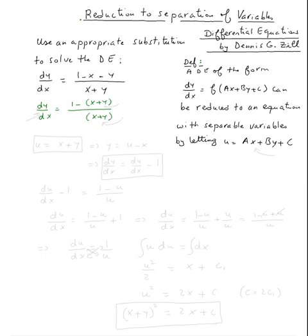So according to the definition, this is the substitution we need to use. In other words, here we need to use u equal x plus y. We're going to plug in u here and there. So dy/dx has to be replaced also by some function of du/dx. First we solve for y, so y is equal u minus x. Therefore dy/dx is equal the derivative of the right side: du/dx minus one, since the derivative of x with respect to x is just one.